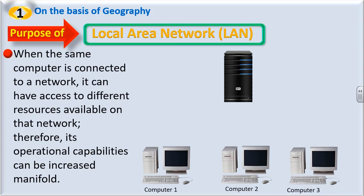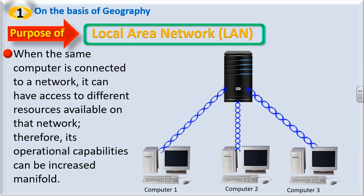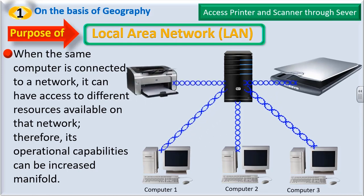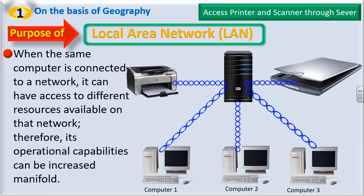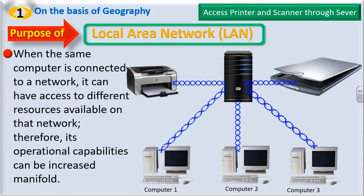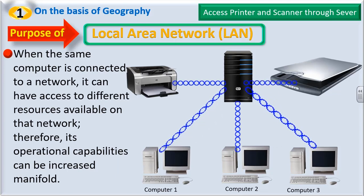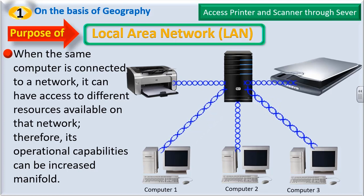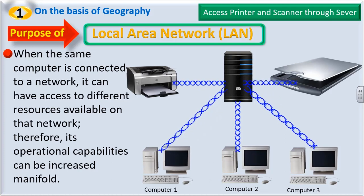Here we have a server and three computers. Each computer can have access to the server. In case a printer or scanner is attached to the server, then computer 1, computer 2, and computer 3 can all access this printer and scanner through the server. It means we need not have a separate printer and scanner for each computer — the services of printer and scanner can be utilized by these three different computers through the server when the computers are networked.